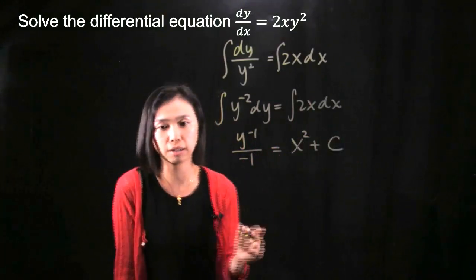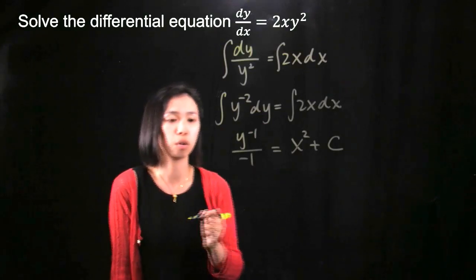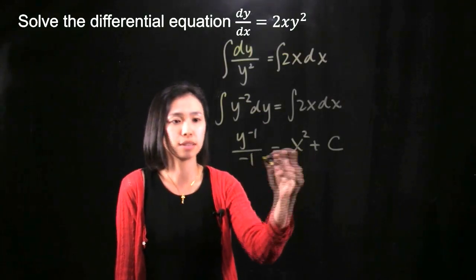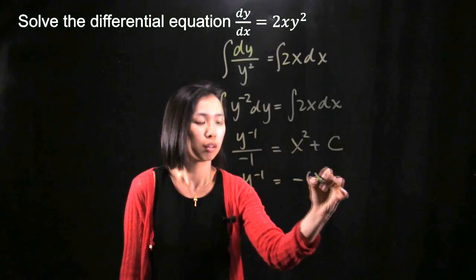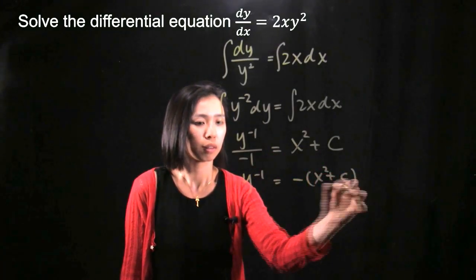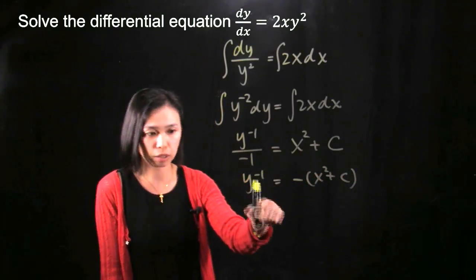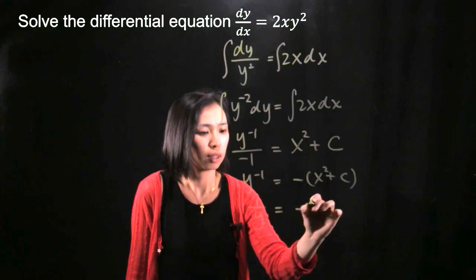Remember, you need to add a c because it's an indefinite integral. We move the negative 1 to the right hand side, and we change y to the power of negative 1 into 1 over y.